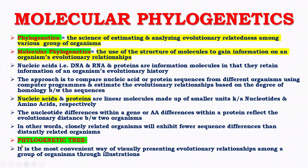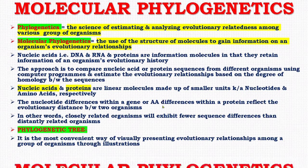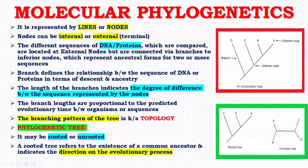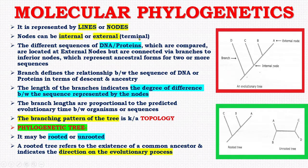Next is the phylogenetic tree. What is a phylogenetic tree? It is the most convenient way of visually presenting evolutionary relationships among a group of organisms through illustrations, and it is represented by lines or nodes. Here you can see this is an evolutionary tree where this is a branch, this is an internal node, and this is an external node. Nodes can be internal or external, that is terminal.